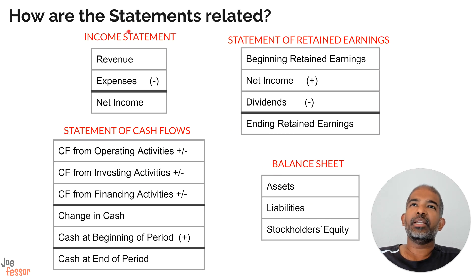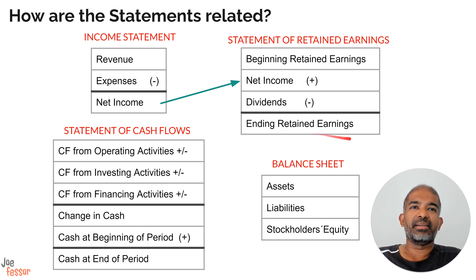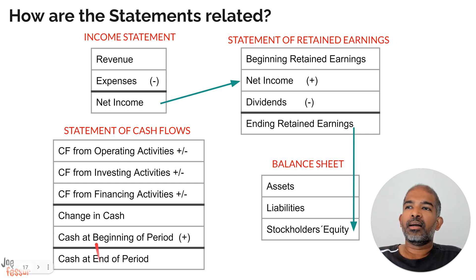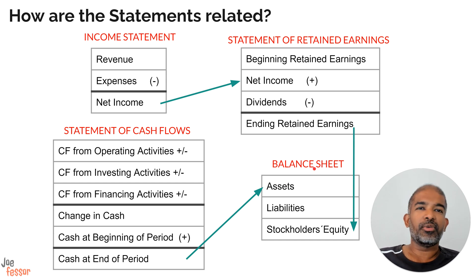Now let's look at how information flows among the different statements. In the income statement, revenue minus expenses gives you your net income. Net income is used in the statement of retained earnings to calculate your ending retained earnings. And this retained earnings becomes a part of stockholders' equity in the balance sheet. Also, if you look at the statement of cash flows, by putting together all the cash inflows and cash outflows, you can calculate how much cash is left at the end of each time period, and this cash balance is also shown under assets in the balance sheet.